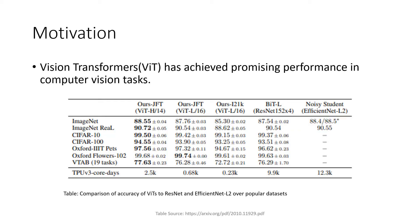So what is the motivation behind this paper? Transformers have achieved promising performance in computer vision tasks. As demonstrated in the comparison table taken from the paper, 'An Image is Worth 16x16 Words' shows that visual transformers demonstrate a marked improvement in performance when compared to convolutional neural networks on different databases.